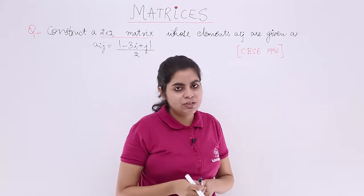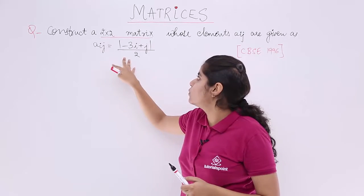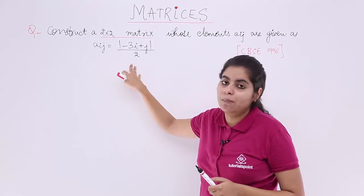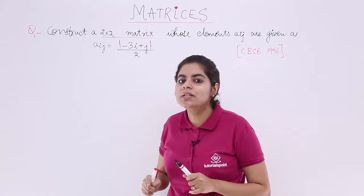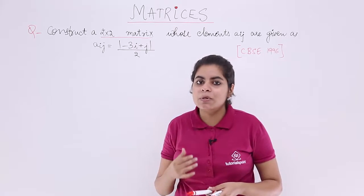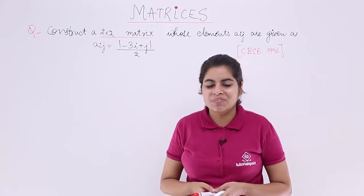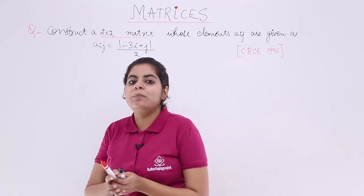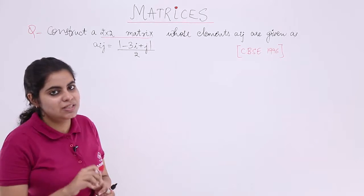This is a CBSE previous year question from 1996 and the rule is Aij equals minus 3i plus j upon 2 with a mod. That is why I have included this question. Most of you know what is the purpose of mod. In this question others will also come to know. So let's get started by putting the heading as solution.